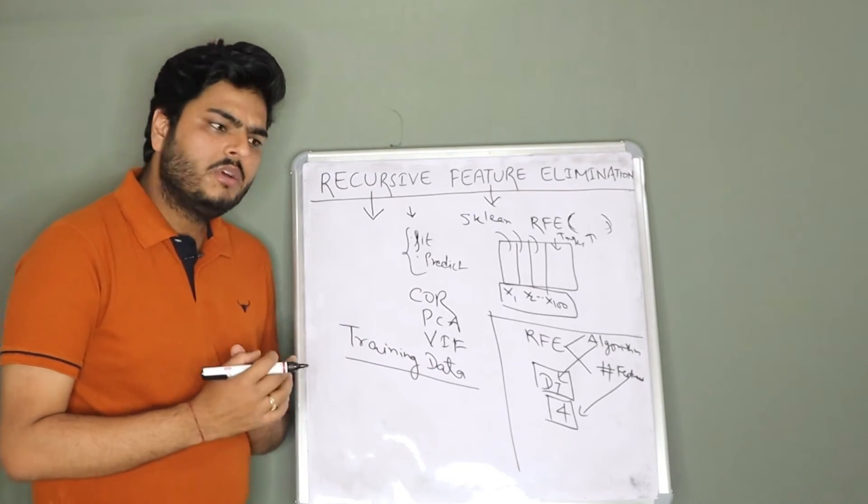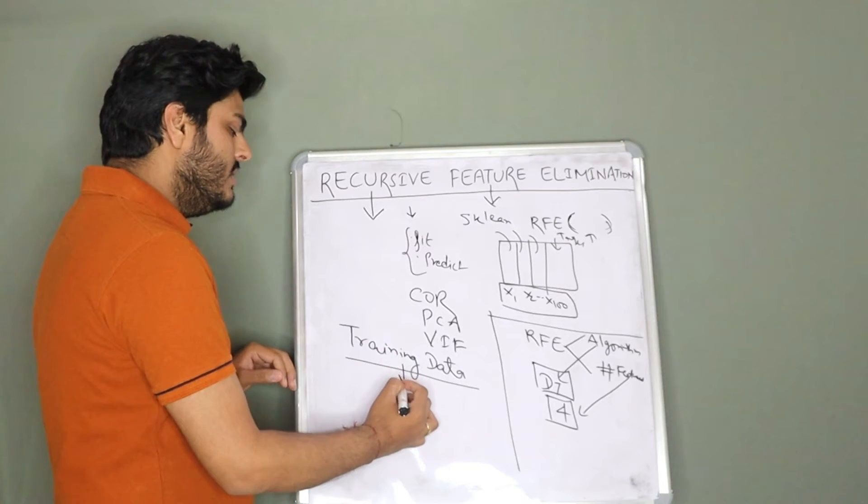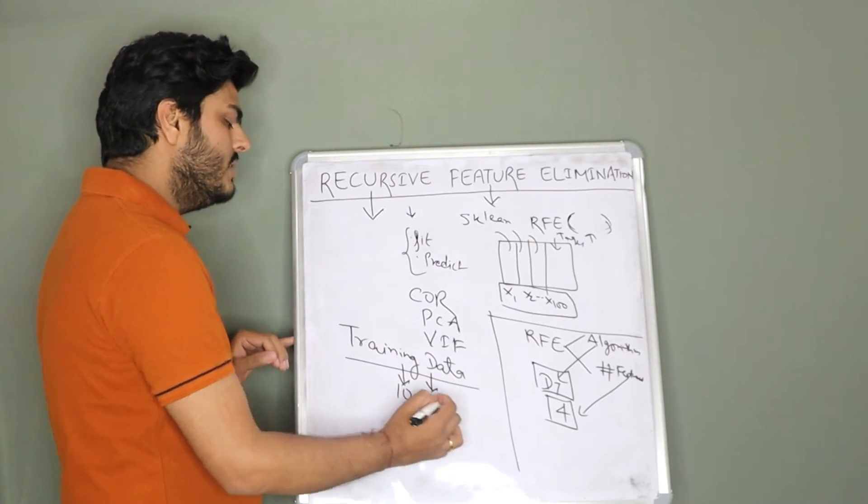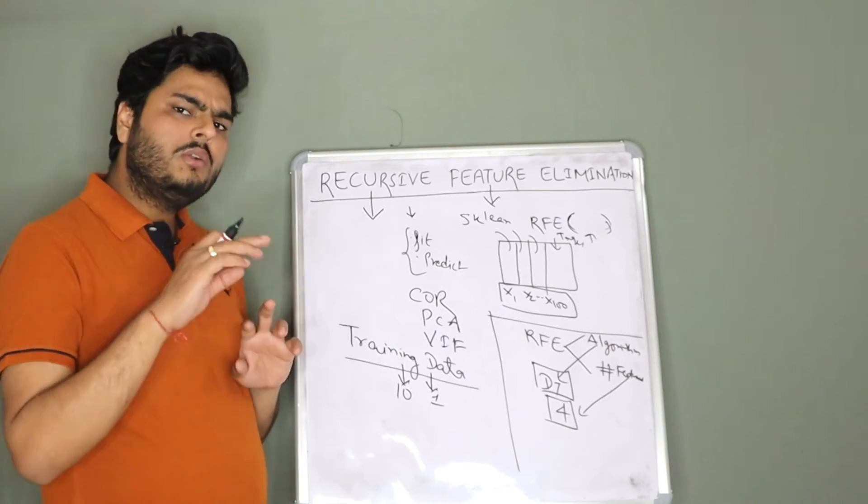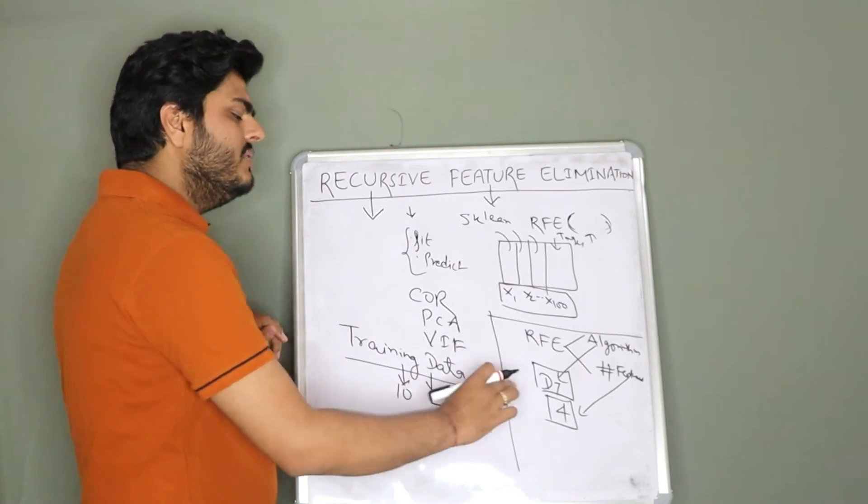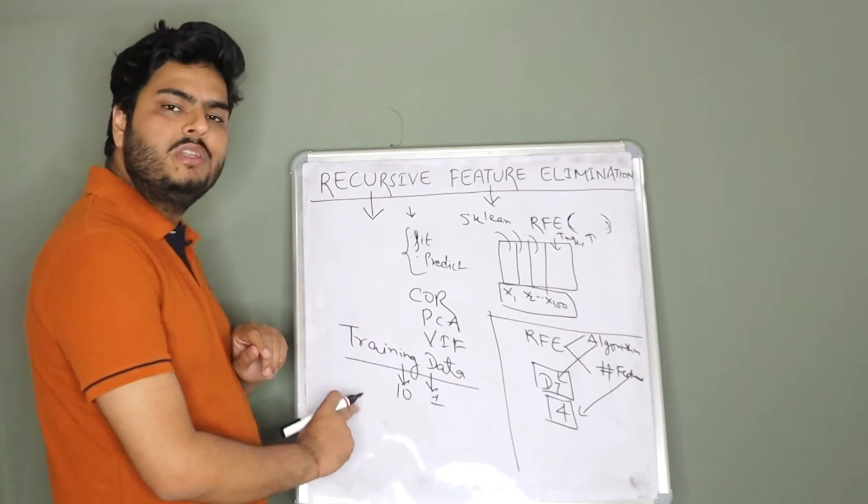How it works? You take a training data. In this training data, let us say there are 10 features and one target. Total 11 columns, 10 features, one target column. What will happen is, if you give DT and 4, first a decision tree model will be fit using all these 10 features.